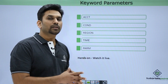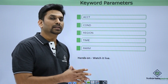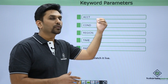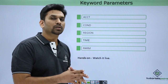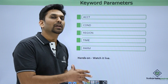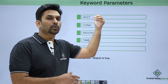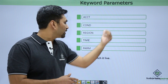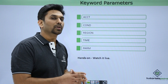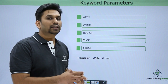The keyword parameters are: ACCOUNTING, CONDITION, REGION, TIME, and PARM. CONDITION and TIME can be coded at the job level, but they can also be coded at the step level. For ACCOUNTING, if you want a particular step to be billed against a different billing number, you can mention ACCOUNTING for that particular step, and it will be valid only for that step.